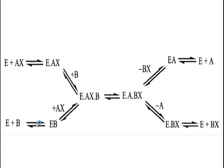EB again binds with the substrate AX to give E-B-AX. Now this E-AX-B will convert into E-ABX.